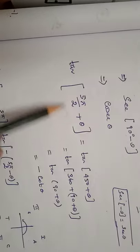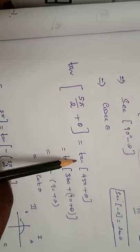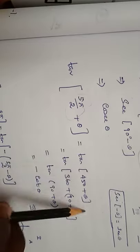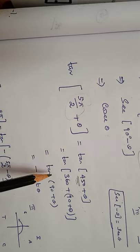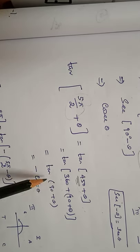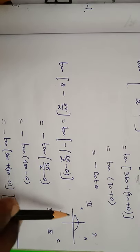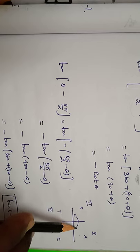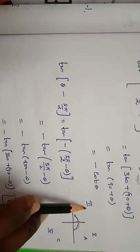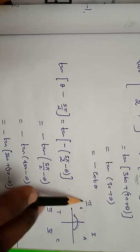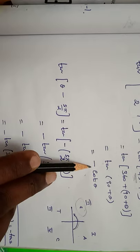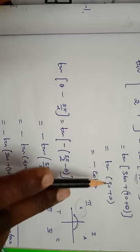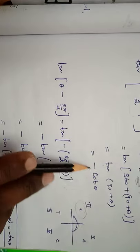Next, tan(5π/2 + θ) = tan(450° + θ) = tan(360° + 90° + θ) = tan(90° + θ). Since 90° + θ lies in the second quadrant where only sine is positive, tan is negative and the ratio changes to cotangent. Therefore, tan(90° + θ) = −cot θ.